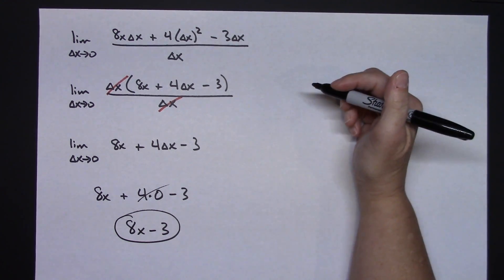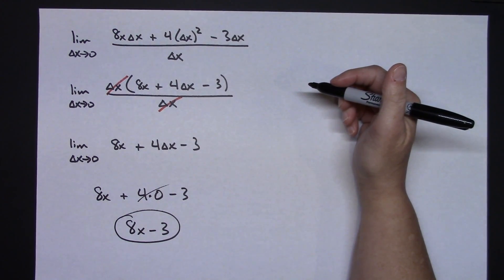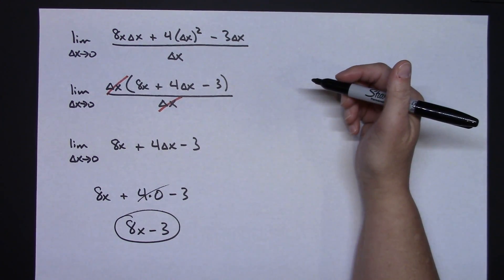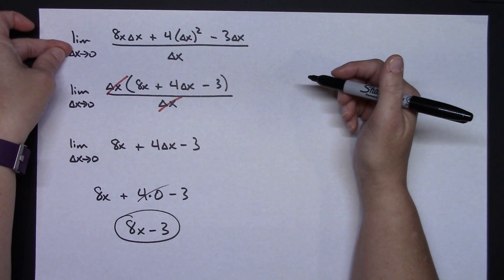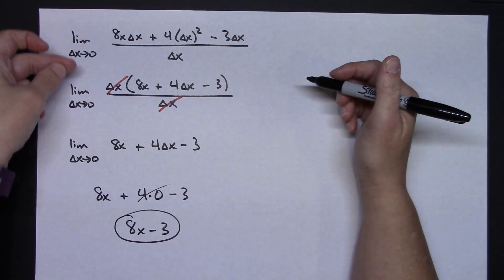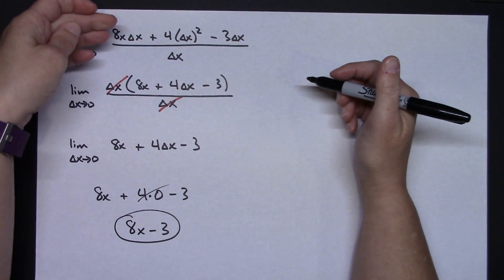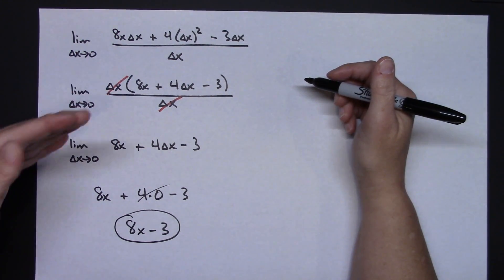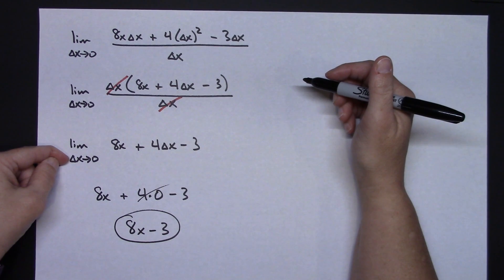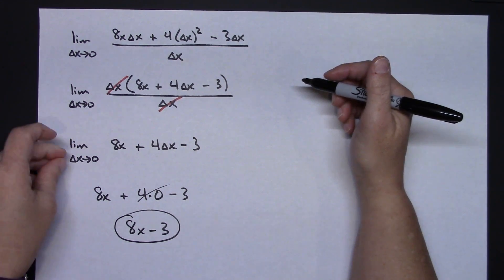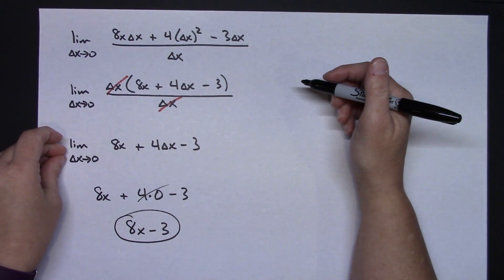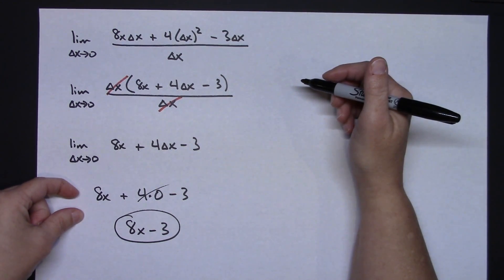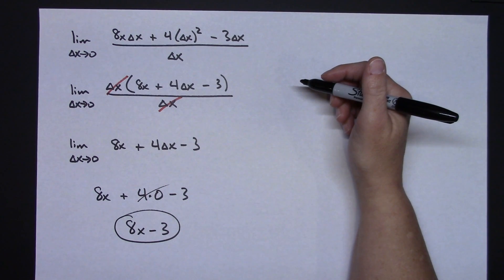Just one example of how you find the limit of the difference quotient. I want to emphasize that the limit notation should stay on every line as you go down, because all you're doing on the right-hand side is algebra manipulation. Once you get to the very end and you're ready to take the limit, you do that direct substitution — that's when the limit notation goes away.